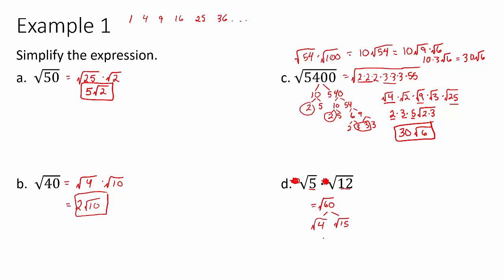Another approach is to simplify √12 first: it splits into √4 × √3, giving 2√3. Then you'd multiply: the 1 in front of √5 times the 2 in front of √3 gives 2 outside, and 5 × 3 = 15 inside, giving 2√15 as well. The danger of simplifying first is that your intermediate result might still need simplification. If you multiply first and then simplify, you'll only have to simplify once.